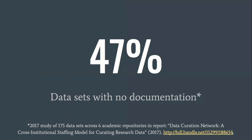When we did a survey of all the datasets that came into our initial six planning phase institutions, we found that 47% came with no documentation whatsoever. These are files coming to us in Excel, in MATLAB, in a wide range of formats with really no explanation of what they are. The only way to get to that FAIR component is by contacting the original author and asking them all the questions you might need.